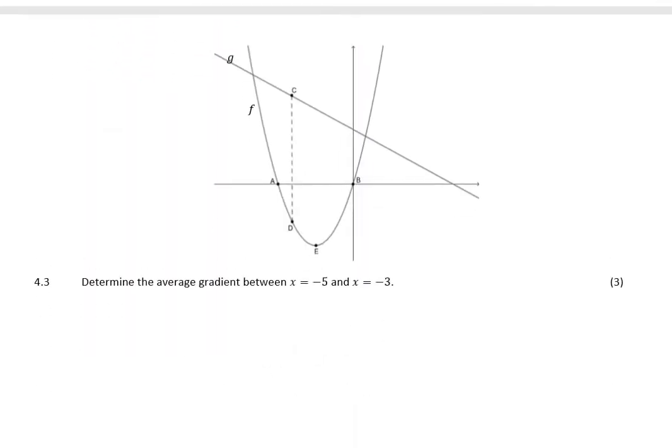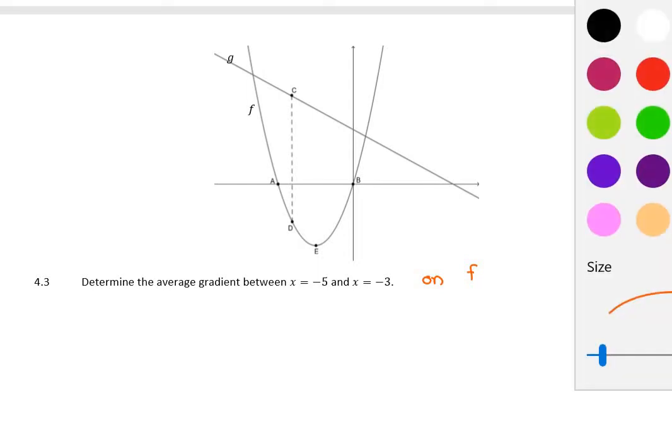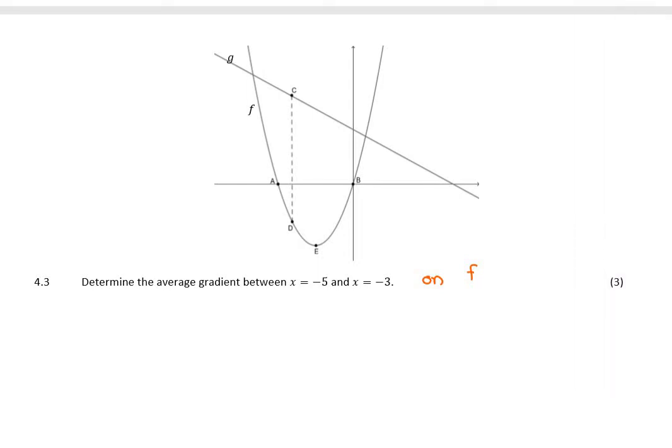Okay, moving on to the next question. We've seen one of these before. Determine the average gradient between x is equal to negative 5, and x is equal to negative 3. I'm assuming they mean of f, or on f, because obviously there wouldn't be an average gradient on g, because that would have a consistent, constant gradient, because it's a straight line. So, a bit of a badly worded question. So this is negative 3. I don't know where negative 5 is. Let me pretend it's there.